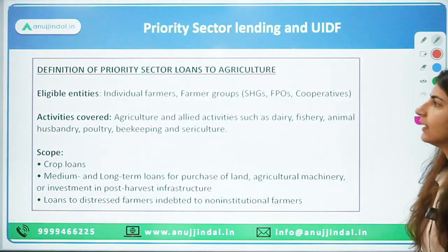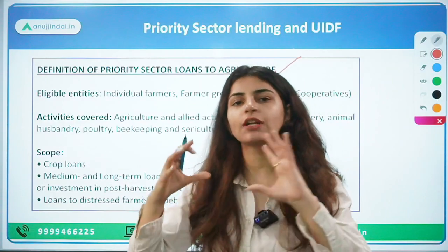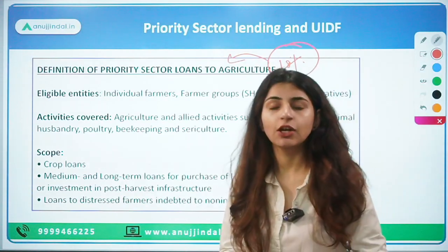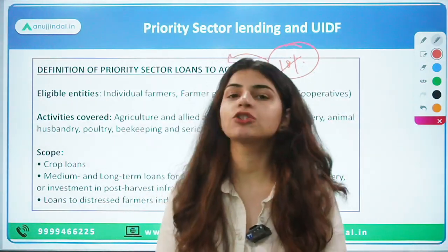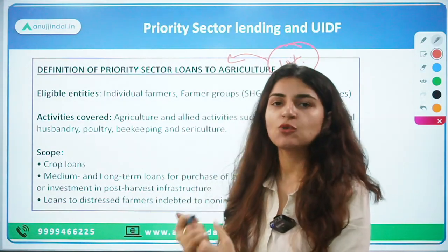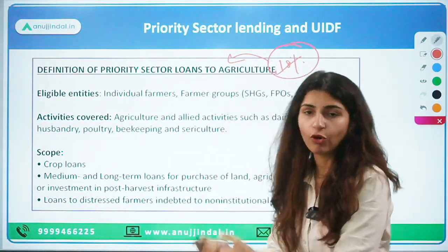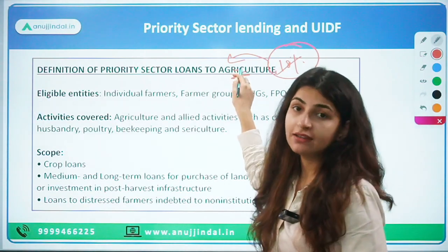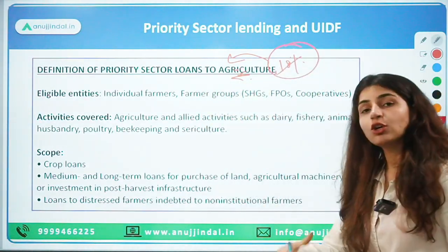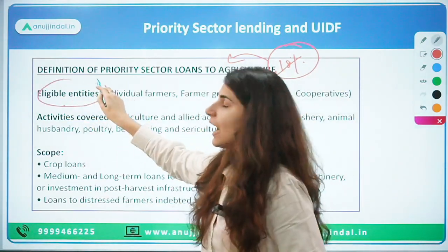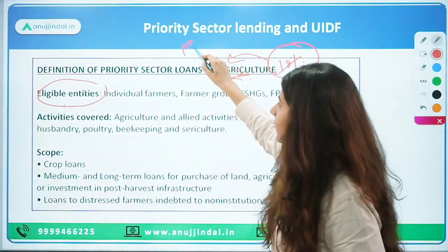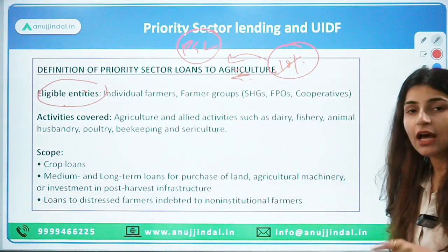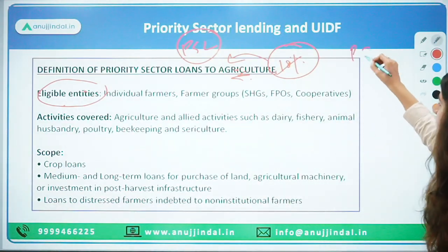18% of the PSL target is supposed to be given to agriculture, because agriculture has a very large proportion in the economy and GDP. RBI wants banks to contribute heavily to the agriculture sector so it can develop well. Eligible entities for agriculture PSL include individual farmers, farmer groups, farmer producer organizations, self-help groups, and cooperatives. Loans to these entities qualify towards the PSL lending target of banks.